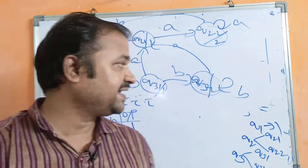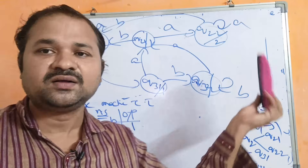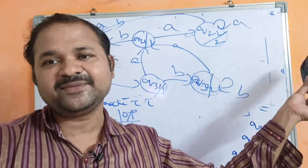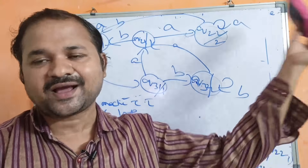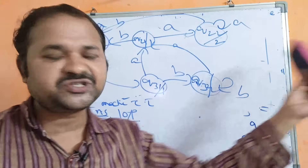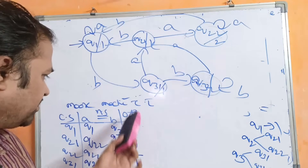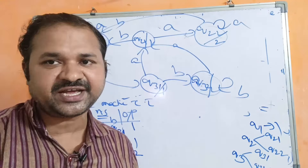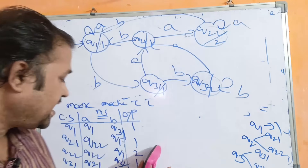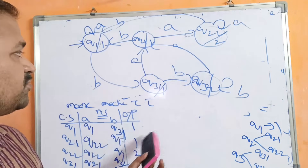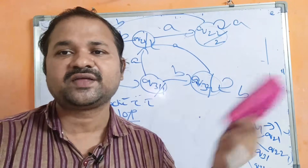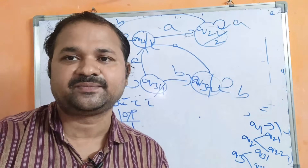In summary, to convert a Mealy machine to a Moore machine: first draw the transition table for the Mealy machine, then derive the Moore machine transition table from it, and finally draw the Moore machine transition diagram based on that table.